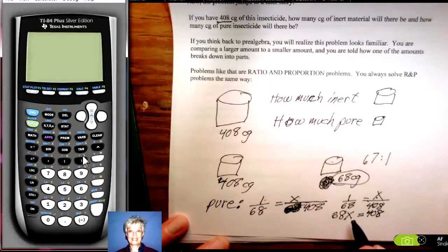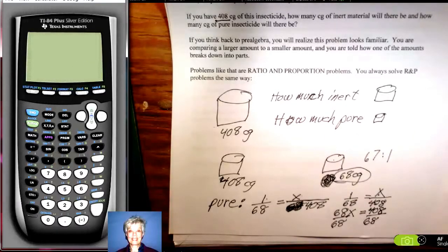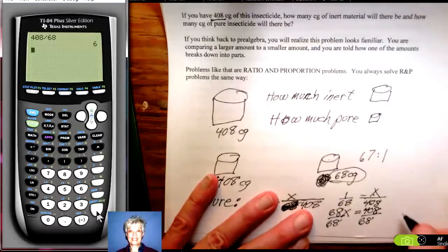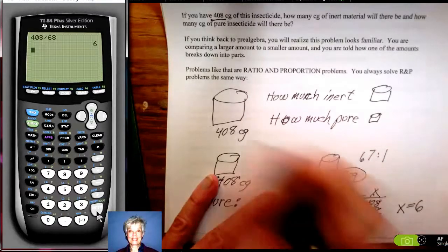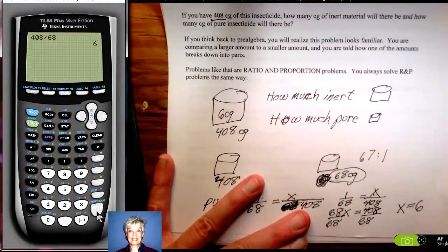I'm going to let that equal 1 times 408. Then, to solve for x, I'm going to divide by 68 and use my trusty calculator over here. Turn it on. Clear it out. I want to know 408 divided by 68 is 6. So, x equals 6.